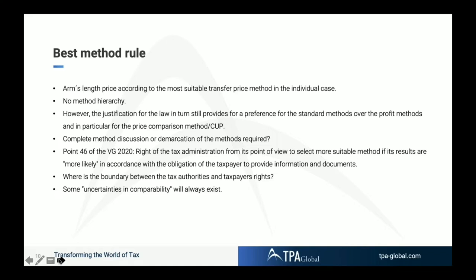A new element is that the tax administration now has the right to select a method that is from their perspective more suitable. If it is more likely from the perspective of the tax administration that another method is more suitable, then the tax inspector has the right to select that other method. This is combined with the obligation for the taxpayer to support this challenge by the tax inspector with information and documents.